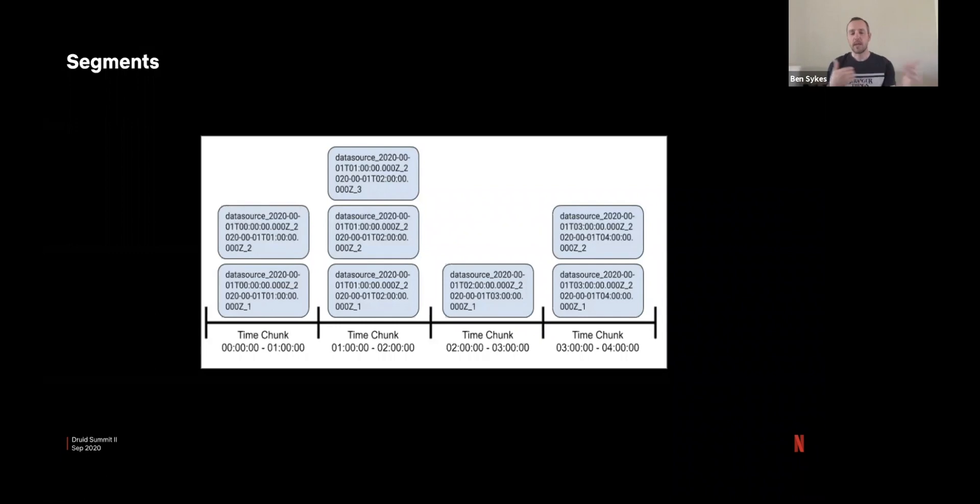You can have many segments per time chunk which is what we have. We control these to be around five million rows which gives us the size within the target of I think the recommendation is 300 to 700 megabytes and depending on what data source we're in they're around that and I don't think they exceed that.